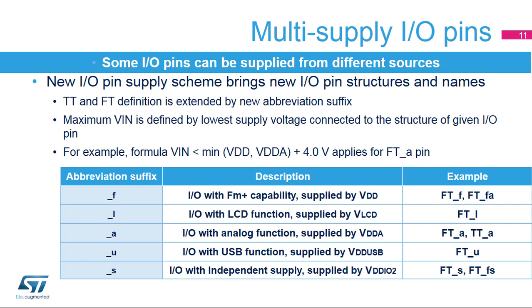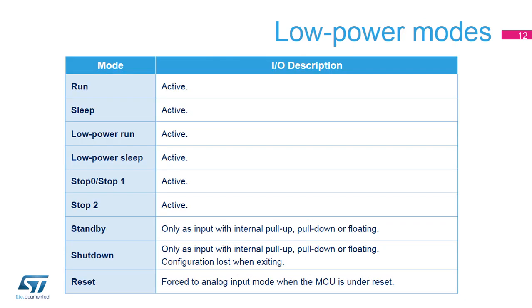The absolute maximum rating for each I/O pin is defined by the lowest voltage of the supplies listed for each I/O pin. I/O pins remain active in all modes except standby and shutdown, where the only available configuration is input with internal pull-up, pull-down resistor, or floating input. When exiting shutdown mode, the I/O configuration is lost. When the MCU is under reset, I/O pins are forced into an analog input mode.